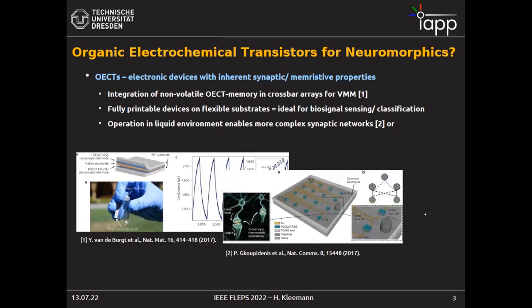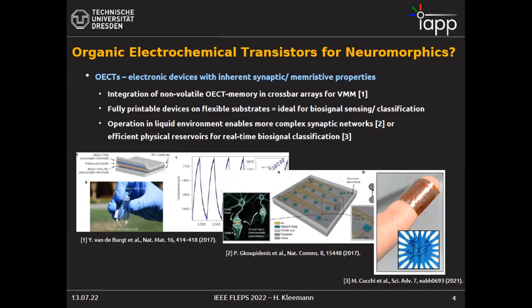There's also work from Max Planck, using the fact that OECTs are always communicating with each other through the electrolyte — so you can use global regulation mechanisms, as also happen in the brain, for neuromorphic computing. There's also work from our group on so-called physical reservoir computing, where we use the nonlinearity of certain nodes to transform information into a higher-dimensional space, which makes classification much easier.